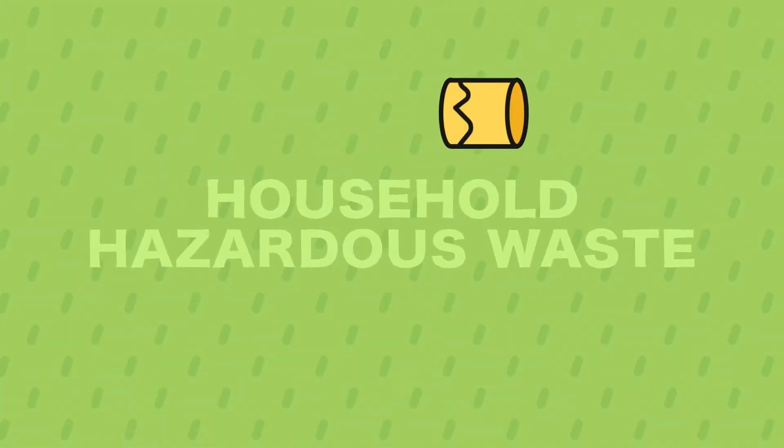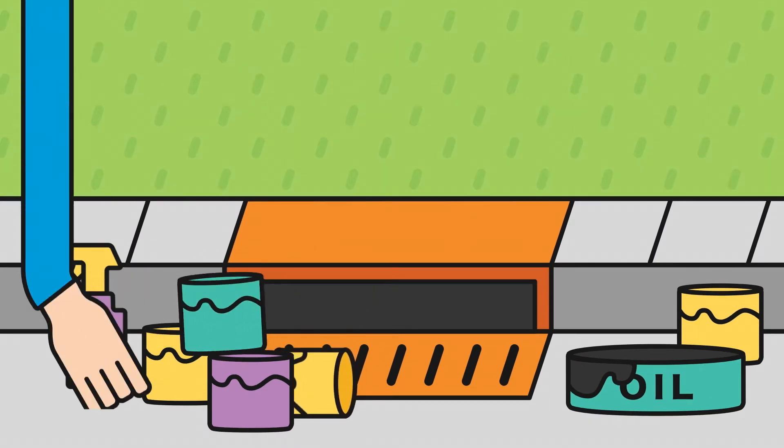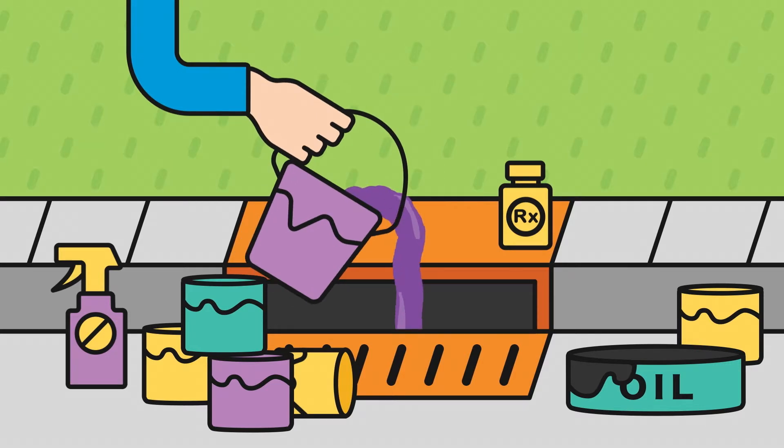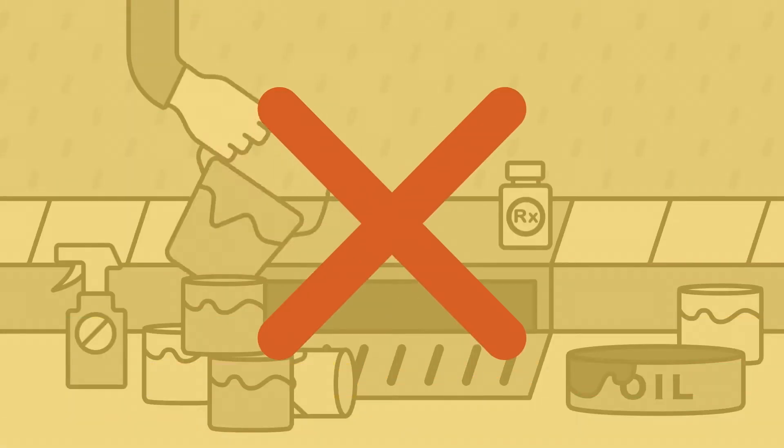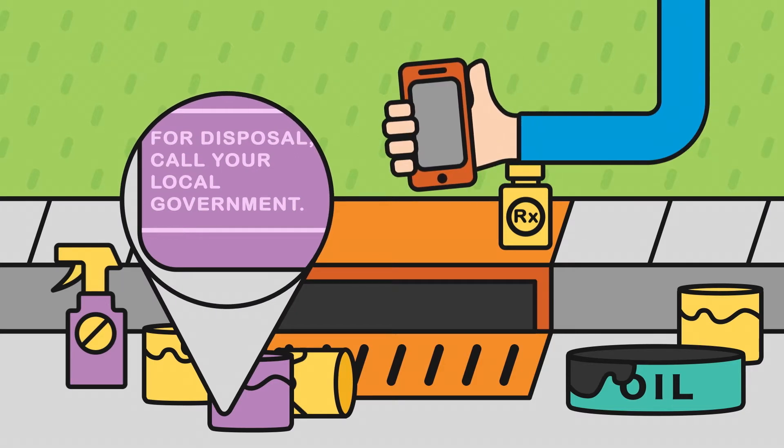Household hazardous waste. Everyday things like household chemicals, cooking grease, paint, and even medicines poison our waters when they get into the storm drain. Never dump these pollutants in the sink or outside, and always check your local regulations to learn how to dispose of them properly.